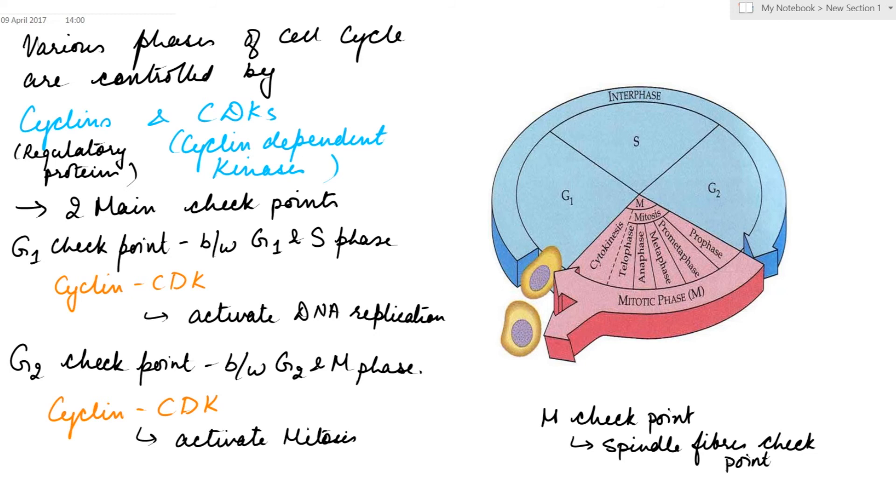The various phases of the cell cycle are controlled by regulatory proteins called the cyclin and cyclin-dependent kinases (CDKs), which utilize ATP for phosphorylation. There are two main checkpoints in the interphase. One is the G1 checkpoint, which is present between the G1 and the S stage. These are checked by the cyclin-CDK complexes and they activate DNA replication.